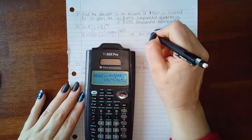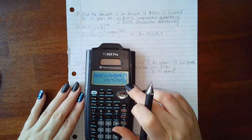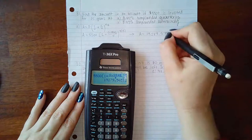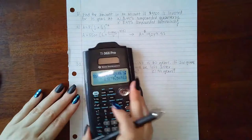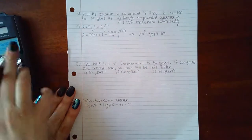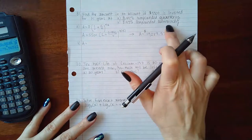If I hit enter, I get 19,279.57. If I round it to the nearest cent, it'll be 57 cents, so that should be the amount in the account if compounded quarterly.